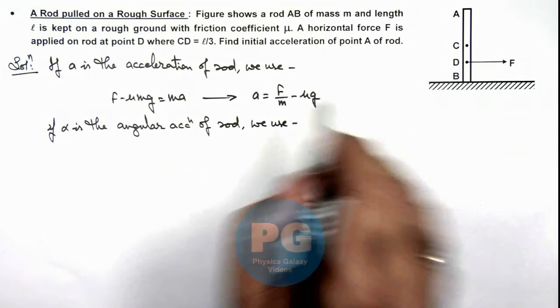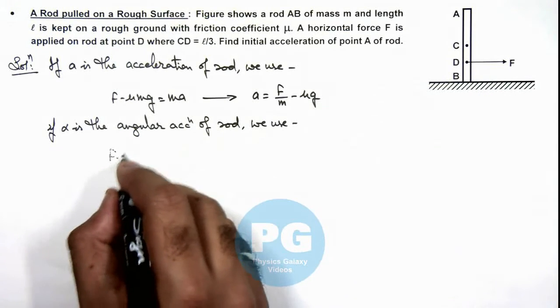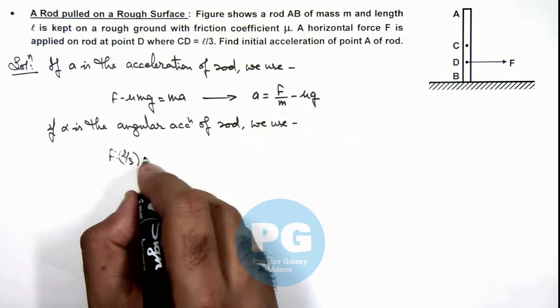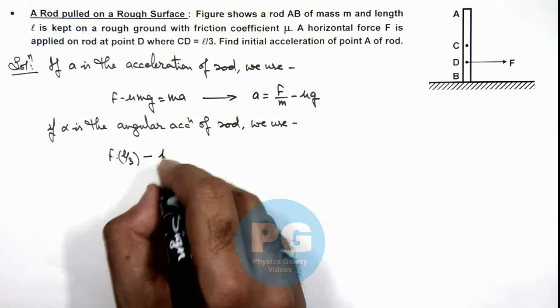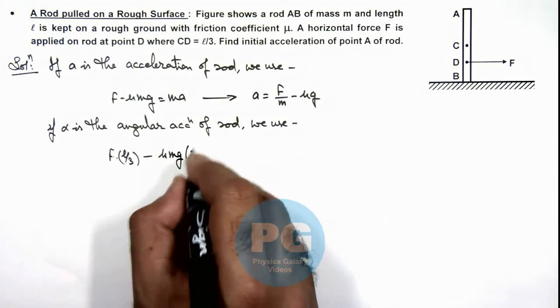The external force is F multiplied by l by 3, minus the torque due to friction which is acting in opposite direction is μmg multiplied by l by 2.